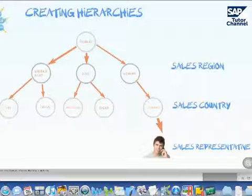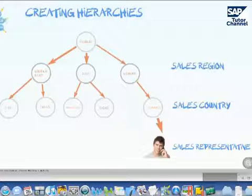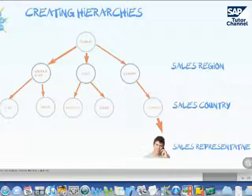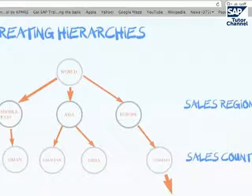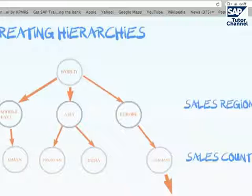So what are hierarchies actually? Hierarchies are a way of organizing your data. In this picture right now in front of you, what you see here is a hierarchy which we use to organize a sales representative. We have different hierarchy nodes. The first node is the sales region. I have put in here three regions: Europe, Middle East, and Asia.